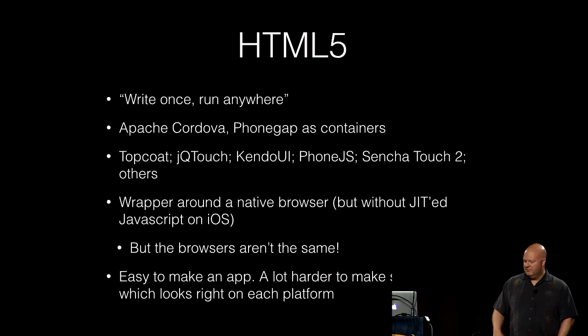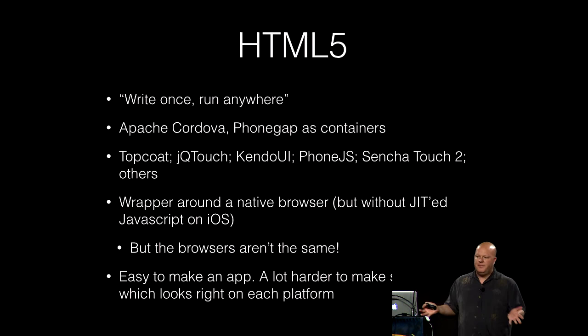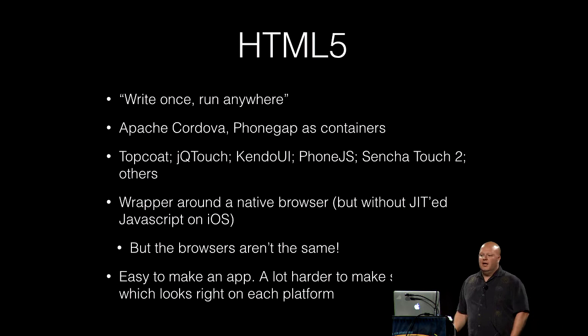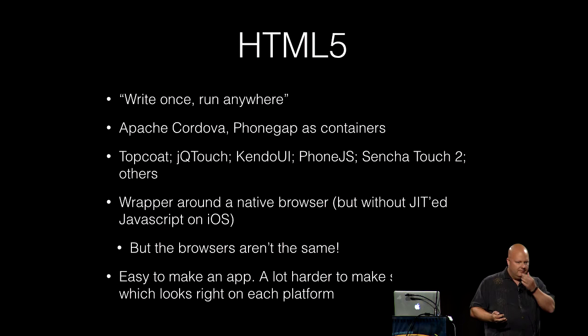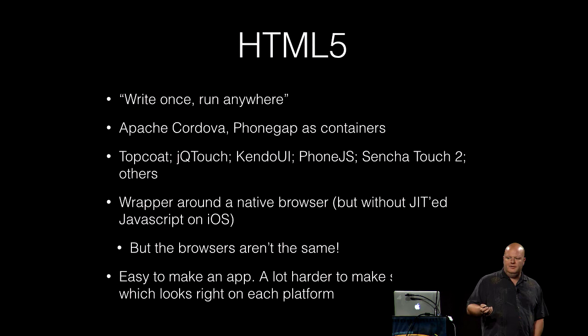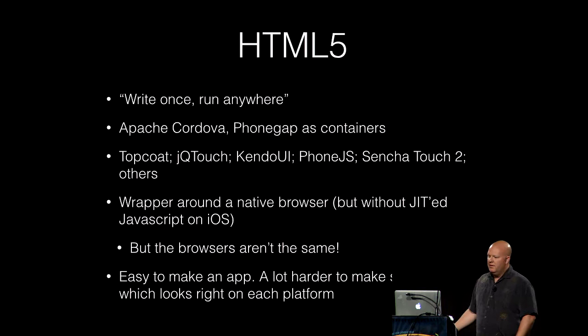The first approach is HTML5 — the whole idea of write once, run anywhere. You package stuff up into Cordova or PhoneGap, or write your own container, and use something like Topcoat, jQuery Touch, or Kendo UI. It's relatively easy to make an app if you already know HTML5, CSS, and JavaScript. But you're likely to end up with an app that doesn't look like an iPhone app when running on iPhone, or doesn't look like an Android app on that platform. You may spend a lot of time customizing styling, or end up with an app that looks the same across all platforms and users get confused.